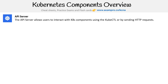Then you have the API server. The API server allows users to interact with Kubernetes components using kubectl or by sending HTTPS requests. I like to think of the API server as the backbone of communication for Kubernetes, and you will see that in a future diagram where it literally looks like the backbone.